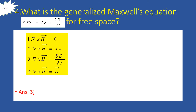Next problem: what is the generalized Maxwell's Equation del cross H equals J_e plus dou D by dou t for free space? For free space, J_e equals zero, so we get del cross H equals dou D by dou t. Option 3 is the right answer.